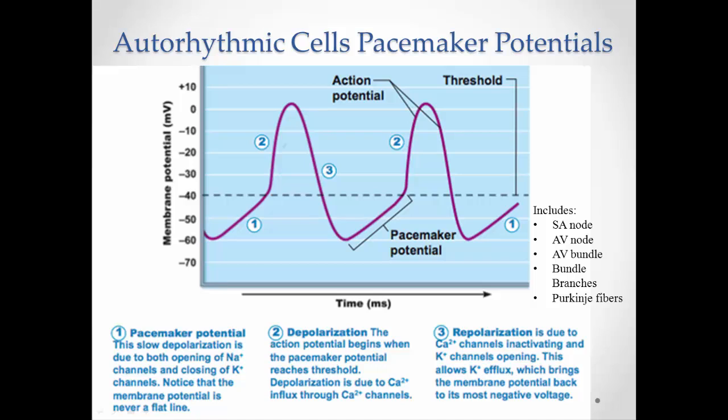There are also auto-rhythmic cells — these are the pacemakers of the heart, and they include all the structures listed here. We'll see more about these in the next video lecture. These are basically self-rhythmic cells that produce their own action potentials. You could literally pull these cells out of the heart, put them in a petri dish with some fluid, and watch action potentials keep being generated — in theory.